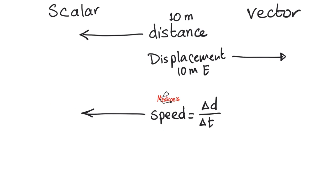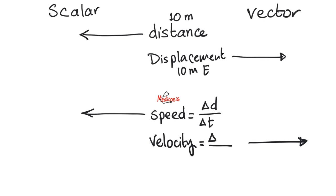How about velocity? I'm driving my car with a velocity of 15 kilometers east — this one has a direction. So velocity is a vector. Velocity is the change in displacement over change in time. Displacement is a vector; time is a scalar. Vector divided by a scalar gives you a vector. So velocity is a vector. If you want a mnemonic: the V goes with the V — velocity is vector.